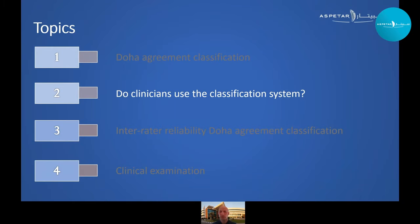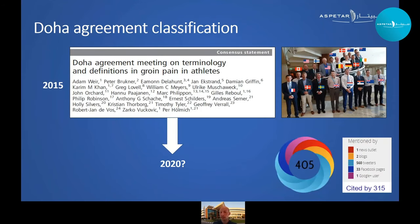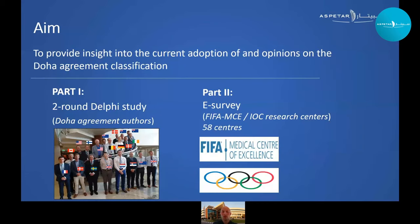We wanted to learn whether clinicians actually use the classification system in clinical practice. The classification system was introduced in 2015 and has been cited over 300 times, but we didn't know if clinicians use it in practice or whether they feel it could be improved. We investigated this through a two-round Delphi study among the original Doha Agreement author group and an e-survey among clinicians working at FIFA Medical Centers of Excellence and IOC Research Centers who regularly treat and assess athletes with long-standing groin pain.